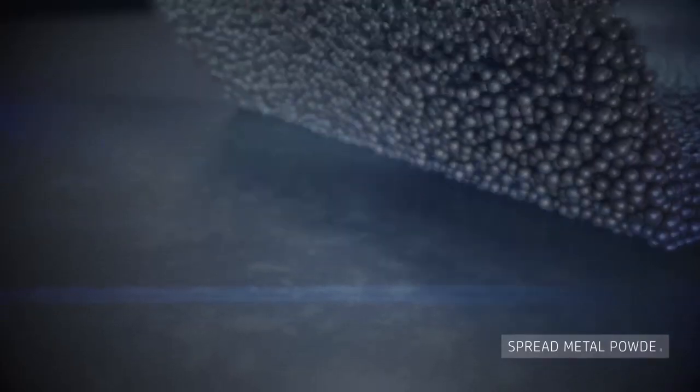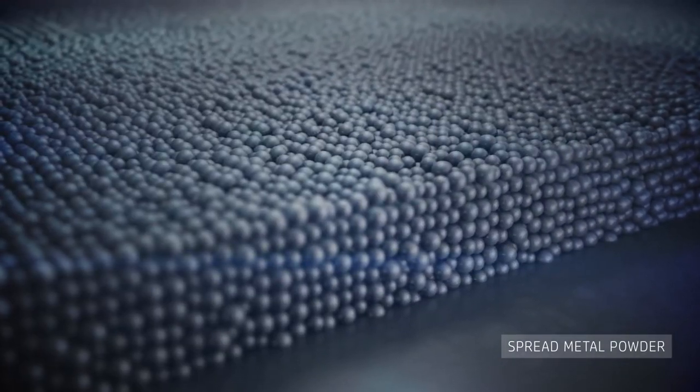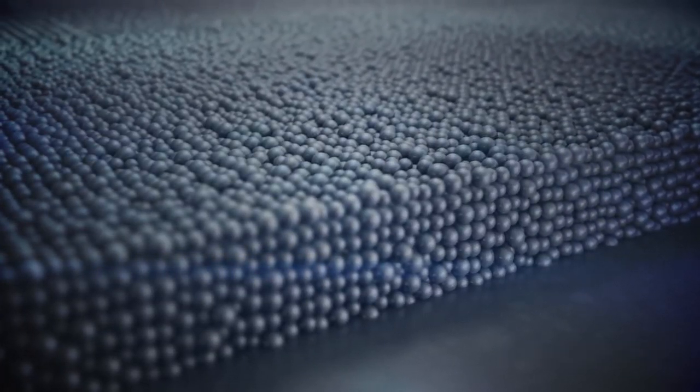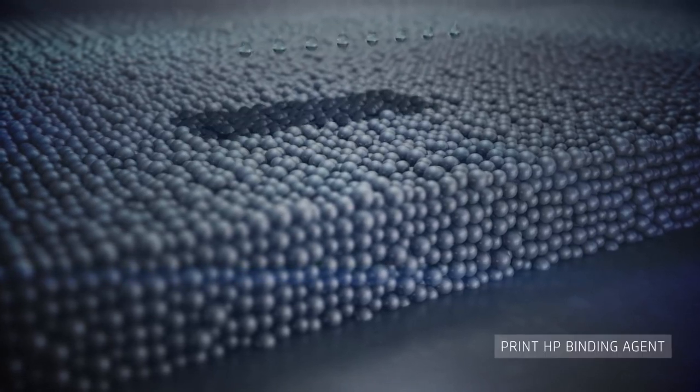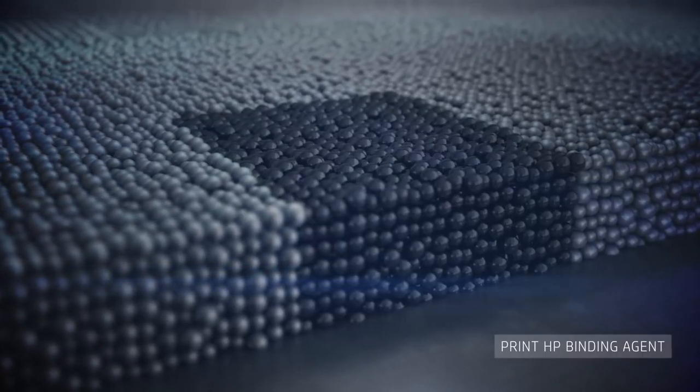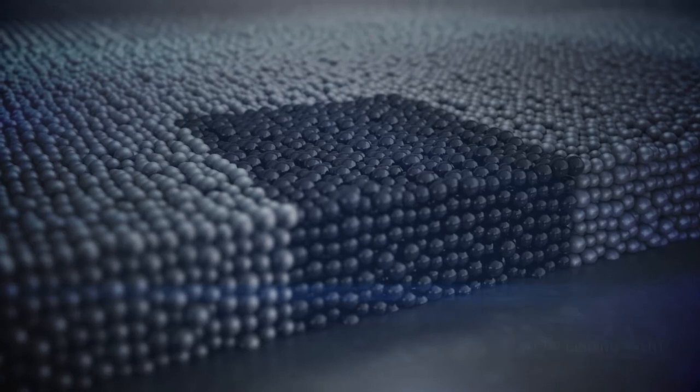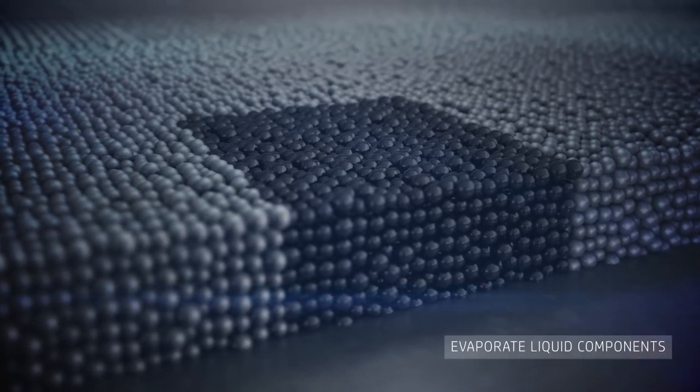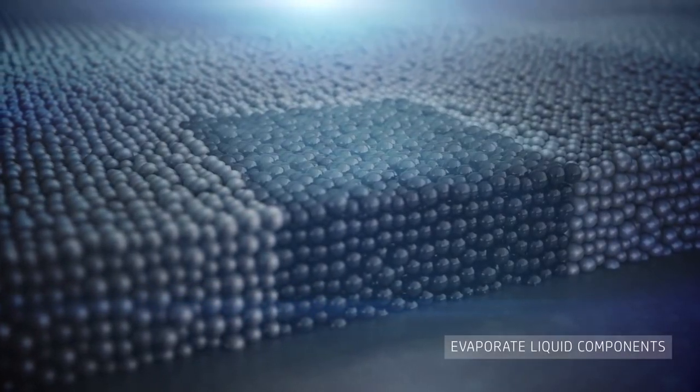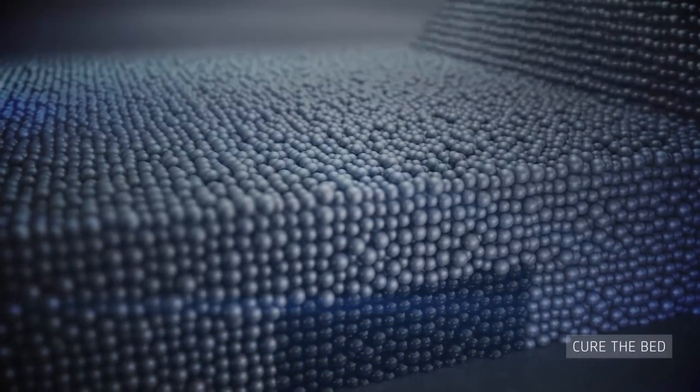The printing process starts by spreading a layer of metal powder. Then, HP binding agent is jetted at precise locations onto the powder bed to define the geometry of single or multiple parts. The energy source helps evaporate liquid components and cure the material.